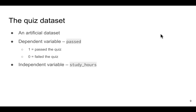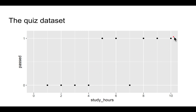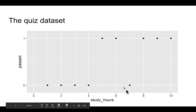Let's take a look at a very simple artificial quiz data set, where the dependent variable is whether the student passed or failed the quiz, and we'll use the number of hours the student studied to predict whether the student will pass or fail. Here's the quiz data set. Generally, the more hours a student spent studying, the more likely the student is to pass — although maybe this student who studied seven hours but still failed is a bit unlucky.